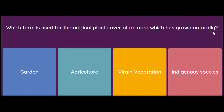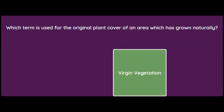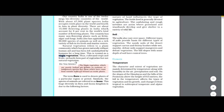Which term is used for the original plant cover of an area which has grown naturally — without the aid of human beings — is it garden, agriculture, virgin vegetation, or indigenous species? Natural vegetation refers to a plant community which has grown naturally without human aid and has been left undisturbed by humans for a long time. This is termed as virgin vegetation.